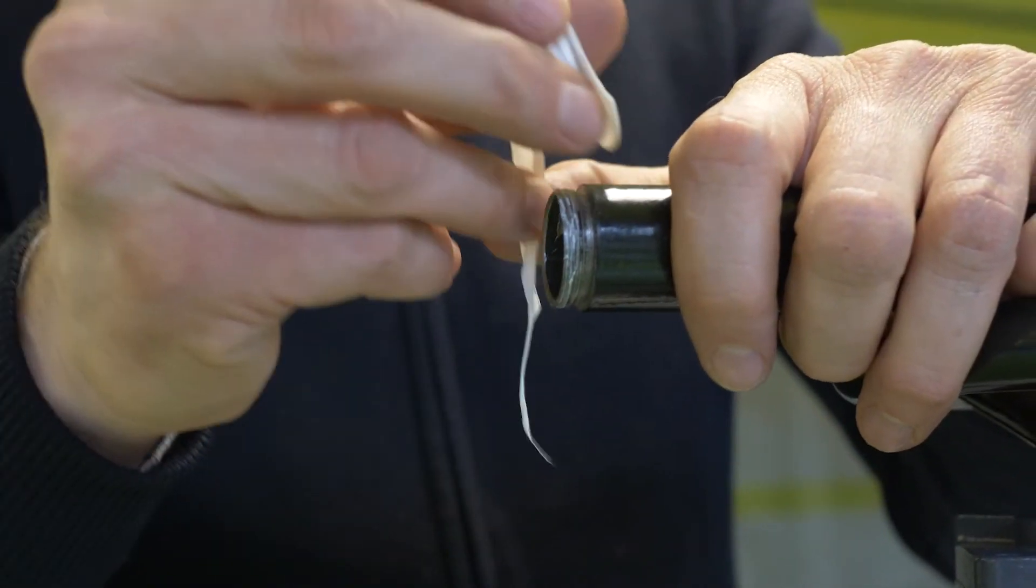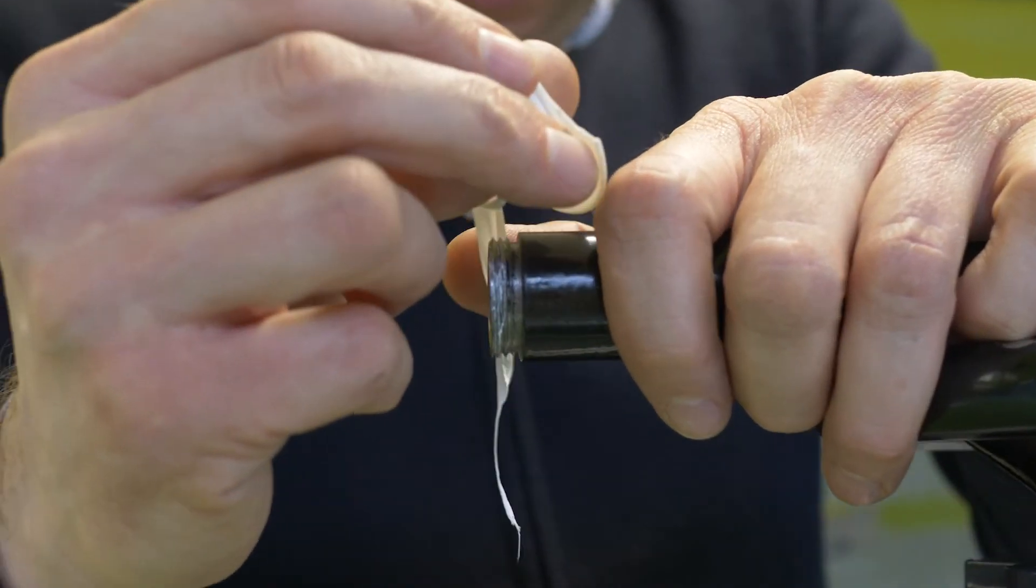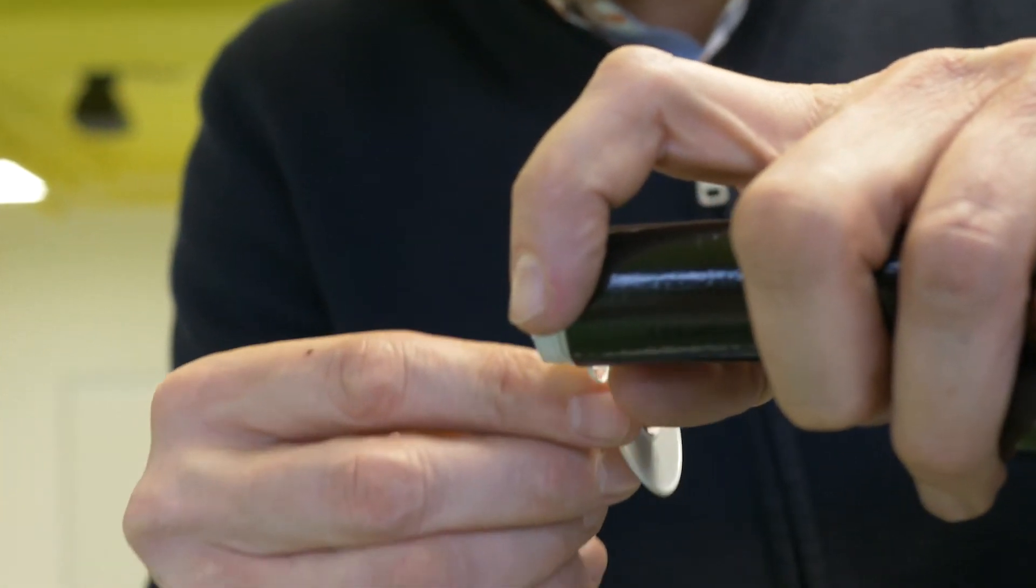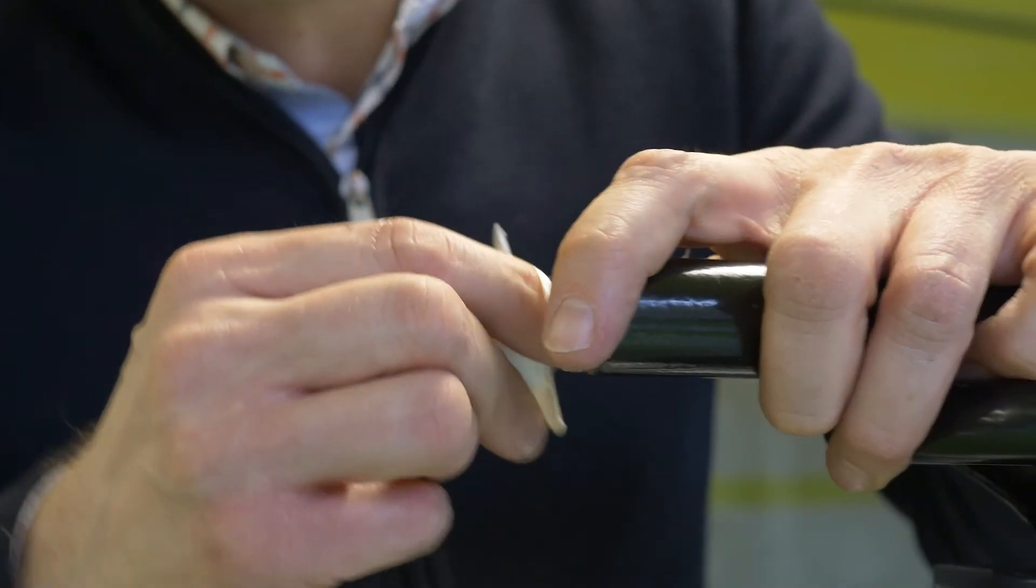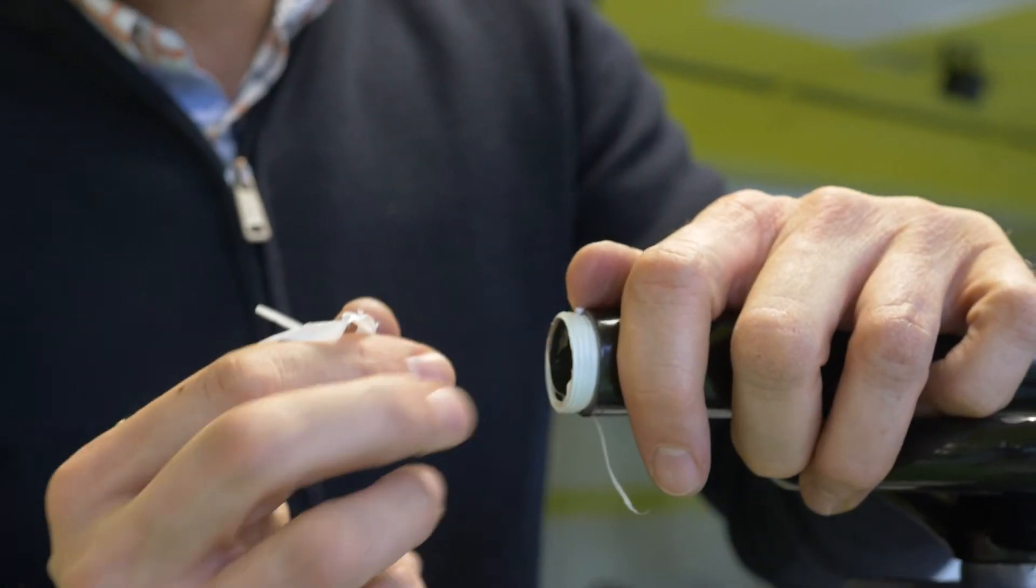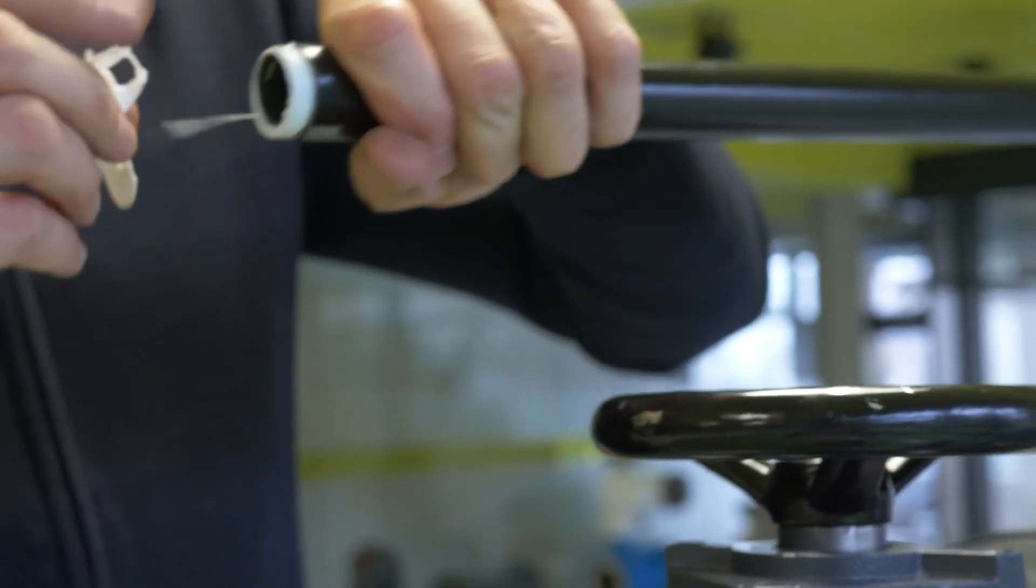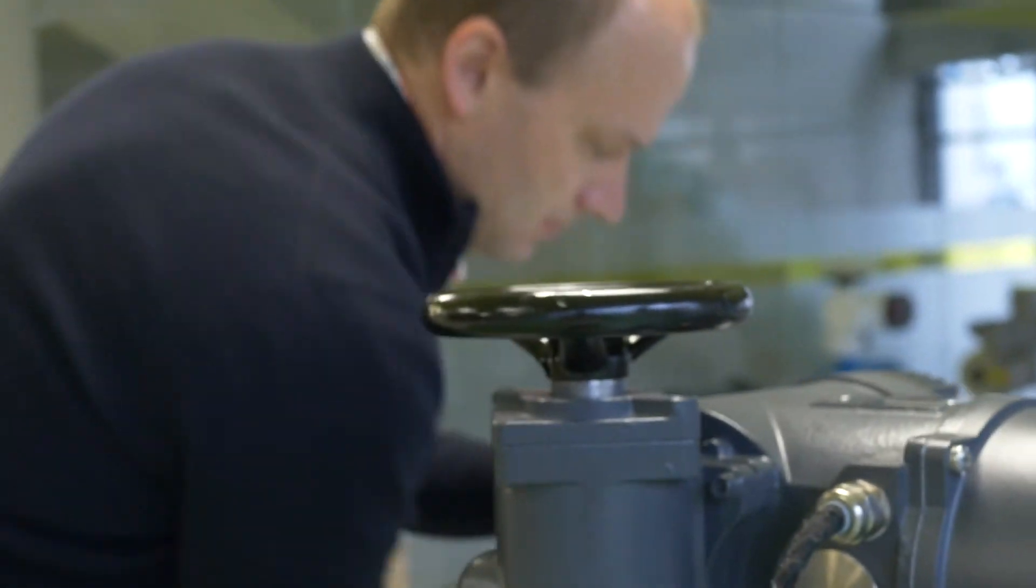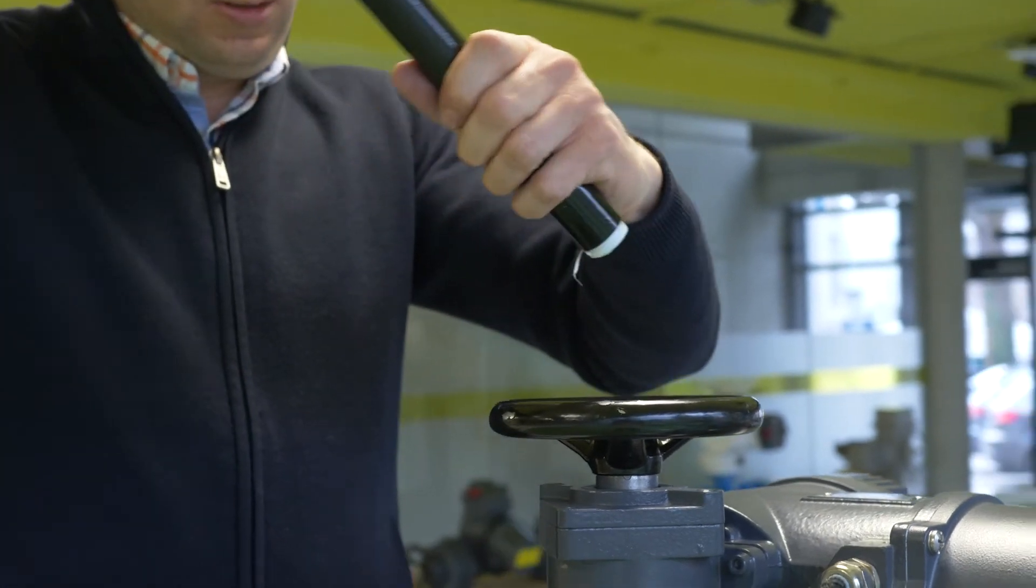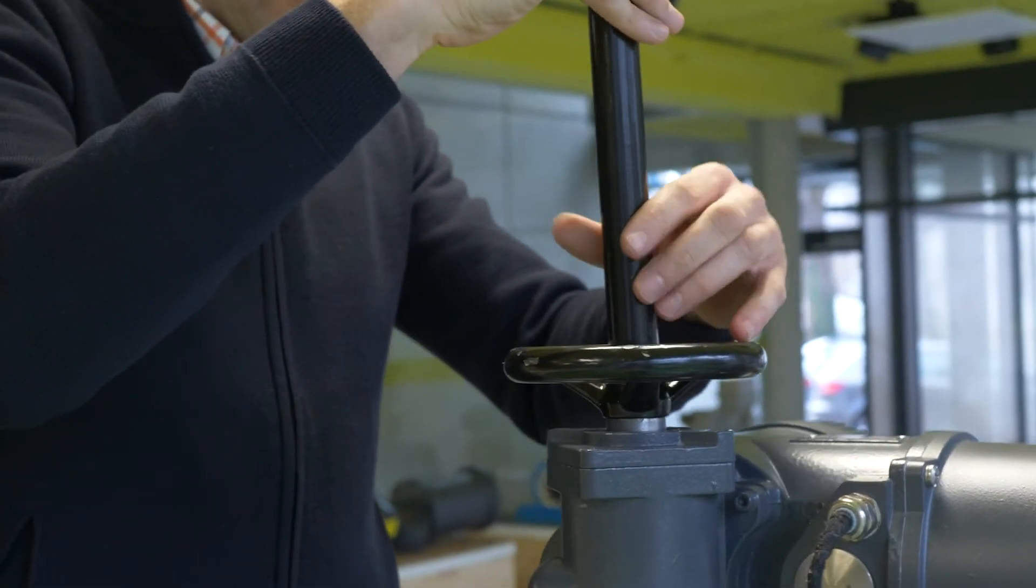So now we do this. We give a new Teflon tape on it. Okay, and now we can turn the stem cover tube in the handwheel of the actuator.